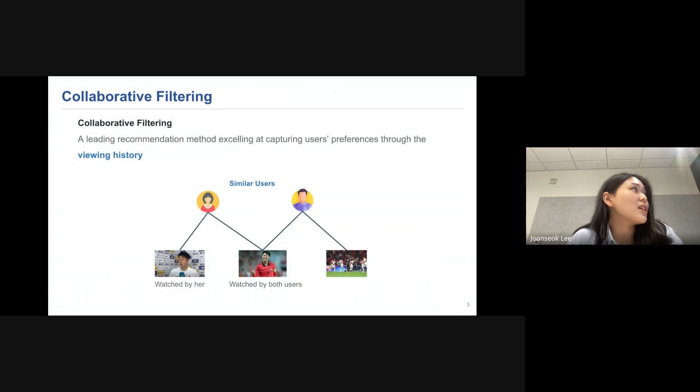Collaborative filtering is a leading recommendation method, excelling at capturing user preference through the viewing history. What I mean by this is, if the video in the middle is watched by both users, the users are considered similar. And if the first video is watched by her but not watched by him, the first video is also likely to be recommended to him.